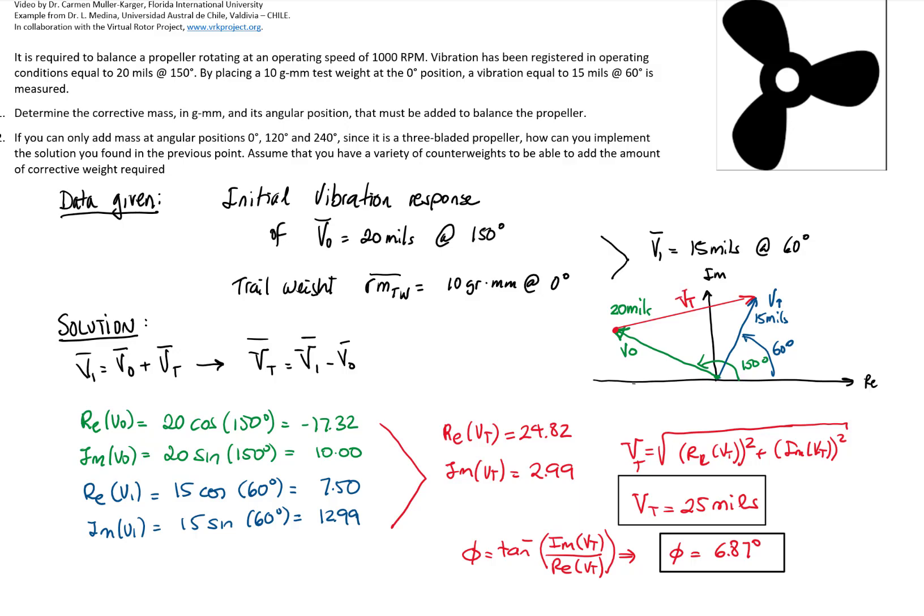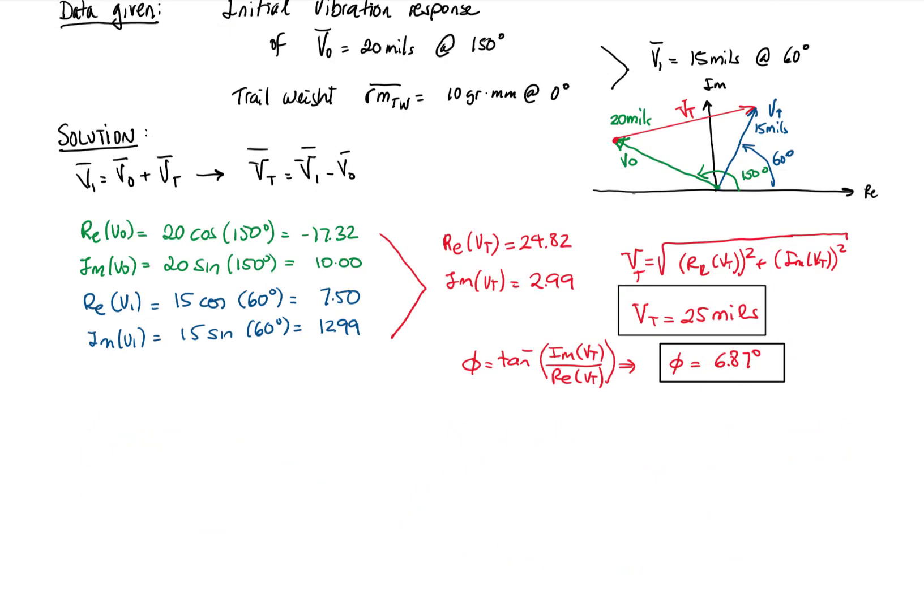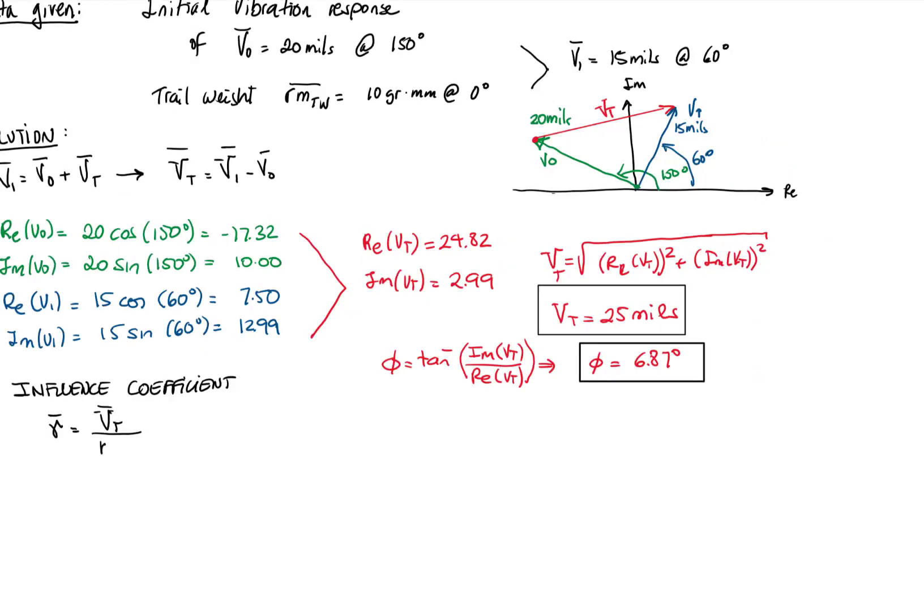Now we will calculate the influence coefficient, which is defined as the response to the trail weight divided by the mass that we use as a trail weight, also as a vector. We will divide the magnitude and subtract the angles. Therefore, we get an influence coefficient of 2.5 mL per gram millimeter at 6.87 degrees.